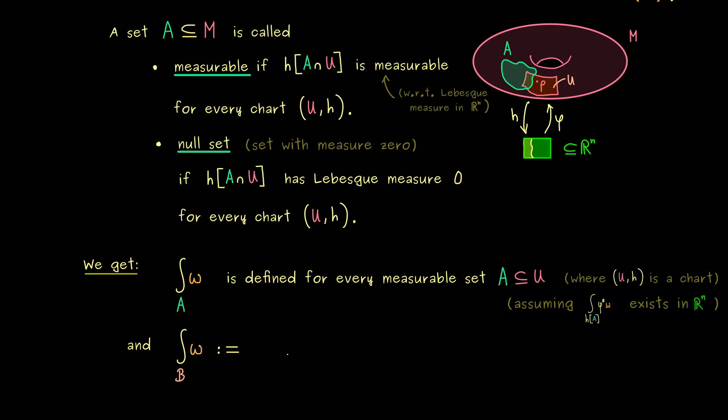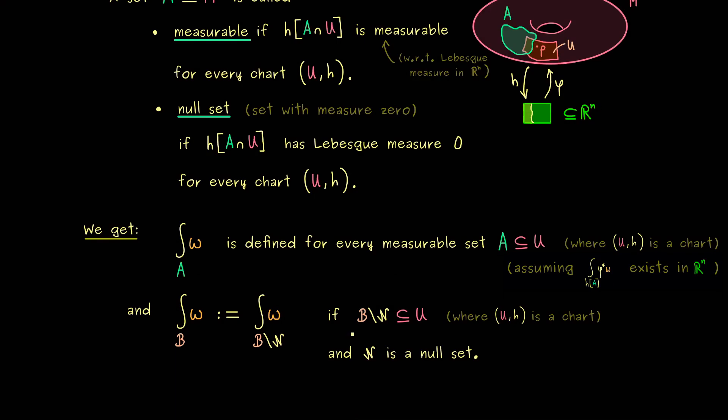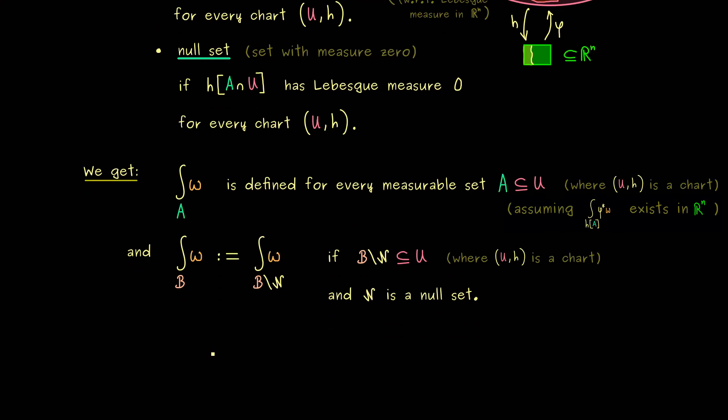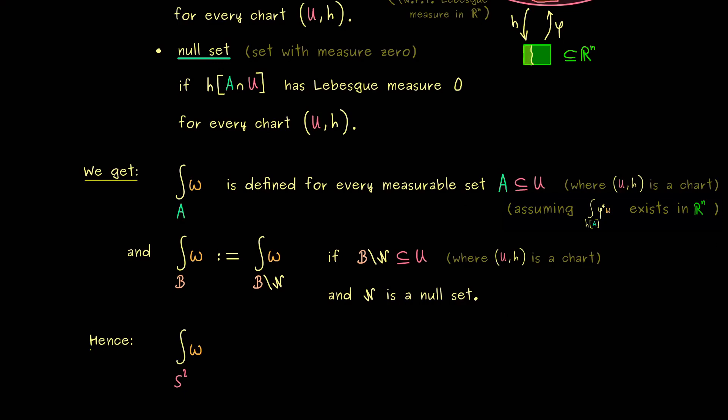The integral here can be defined by the integral where we subtract a null set n. On the right-hand side, we need that b without the null set lies inside a chart. This definition we can already use to define the integral of our sphere S^2. The whole calculation is already done and we know the result is 4π. Moreover, we see that we can integrate all possible measurable subsets in S^2 now. The problem of integrating on the sphere is solved for us. But of course, we also want to tackle other manifolds. It would be nice to have a general theory for sets that don't lie in a single chart. We have already seen the idea: we just have to split the set up. It's not so complicated, but it's some technical work we have to do. This is something we should discuss in the next video. I really hope we meet again and have a nice day. Bye!